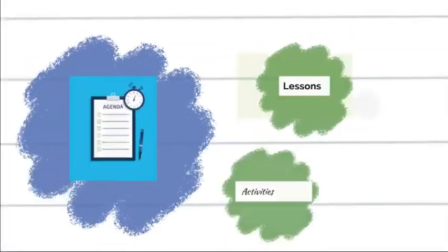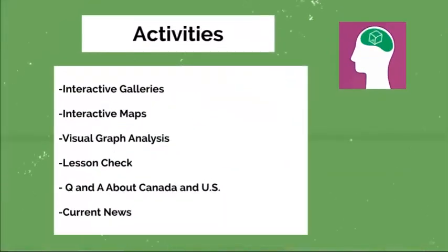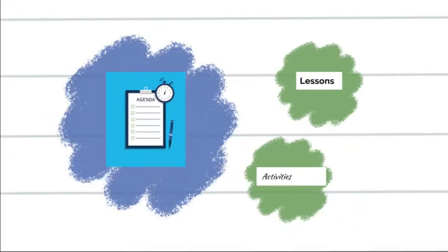And that's basically it from what we'll be covering. In terms of the activities, keep in mind you'll have interactive galleries, interactive maps, visual graph analysis, lesson checks for 2.4 and 2.5, Q&A discussions about Canada and the U.S., and of course the current events to bring everything together towards the end of the week. You might also be labeling some geographical regions in Canada and the U.S. through map exercises where you memorize the provinces and territories. I know some of you really wanted to do some map labeling, so this is where we'll be integrating that.